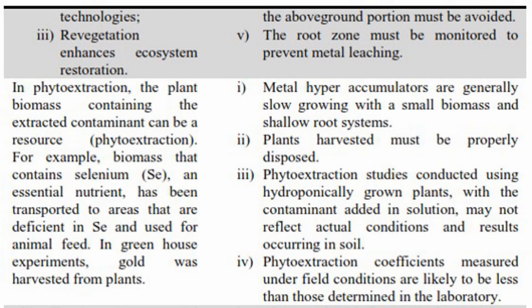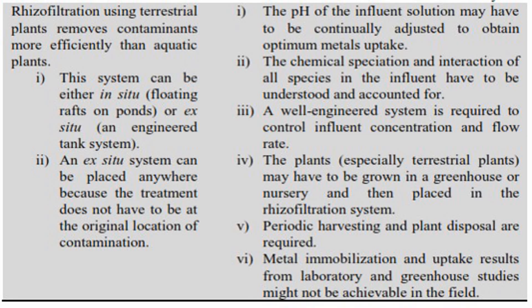One advantage is phytoextraction; a limitation is that metal hyperaccumulators are generally slow-growing with small biomass and shallow root systems, and harvested plants must be properly disposed of. Another advantage is rhizofiltration — using terrestrial plants removes contaminants more efficiently than aquatic plants. A limitation is that the pH of the influent solution may need to be continually adjusted to obtain optimum metal uptake. Please review all the advantages and limitations in this table.